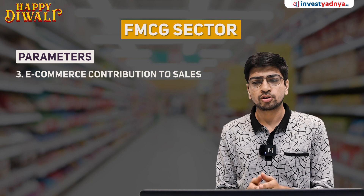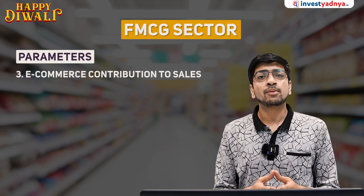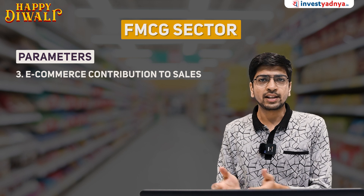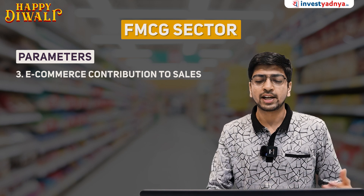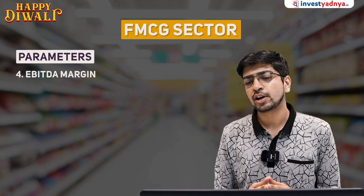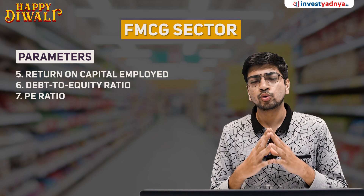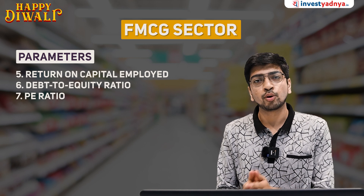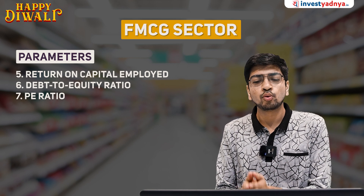E-commerce contribution to sales percentage also matters a lot. Many listed FMCG companies mainly depend on traditional means — around 90% of revenue — whereas e-commerce is somewhere around 10%, although that number is increasing and companies are making a lot of expansion on the e-commerce side of their business. EBITDA margin remains a very important metric — HUL currently has an EBITDA margin of somewhere around 23% in Q1 FY23. Return on capital employed, debt-equity ratios, and PE ratio are also very common metrics to assess any manufacturing company. HUL has a debt-equity ratio of zero — it is a debt-free company, which is a very good parameter in business downturns.